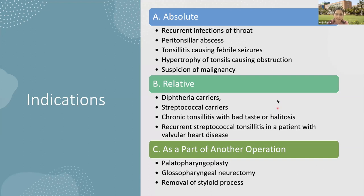Absolute indications for tonsillectomy are recurrent throat infections, peritonsillar abscess, tonsillitis causing febrile seizures, hypertrophy causing obstruction, and any suspicion of malignancy. Relative indications are diphtheria carriers, streptococcal carriers, chronic tonsillitis with bad taste or halitosis, and recurrent streptococcal tonsillitis in a patient with valvular heart disease. Sometimes it is conducted as part of another operation such as palatopharyngoplasty, glossopharyngeal neurectomy, and removal of the styloid process.